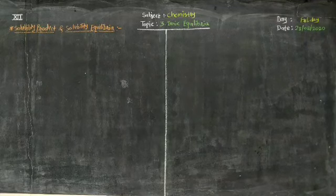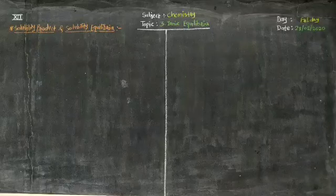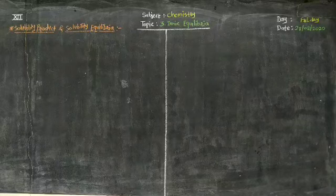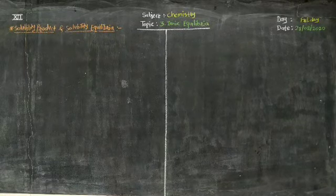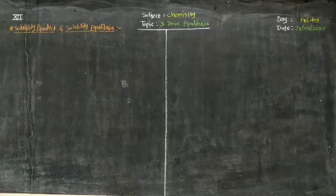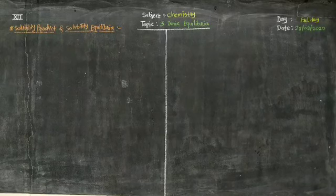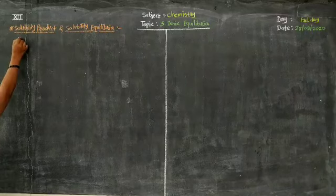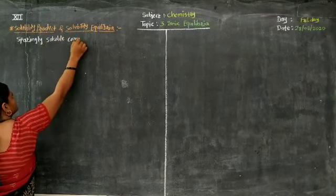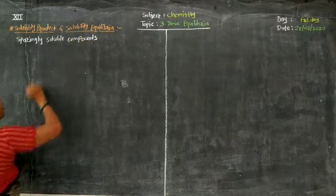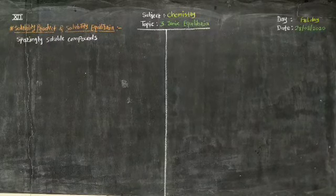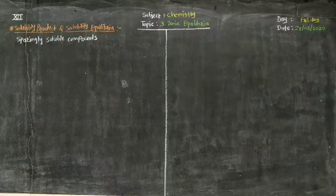The word solubility means the ability of a particular salt, electrolyte, or compound to dissolve and dissociate. Before studying solubility product, we must know what is meant by a sparingly soluble salt or a sparingly soluble compound. Sparingly soluble compounds are those that dissolve only slightly in water. Most of the salt remains undissolved.